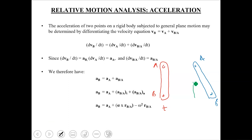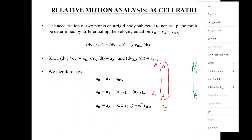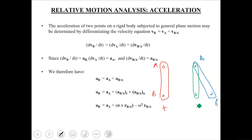When we were doing velocity analysis, we divided the motion into two components. We said that the rigid body has been translated by a certain amount, shown here, and after that this whole rigid body rotates about the base point by an amount theta. So simultaneous translation and rotation is broken down into its translatory and rotational components.